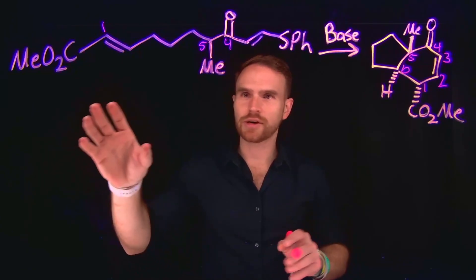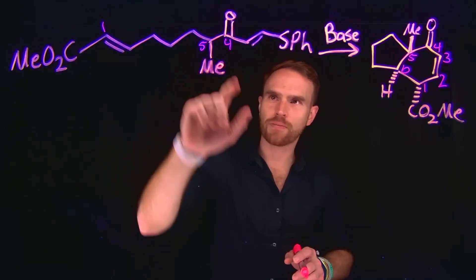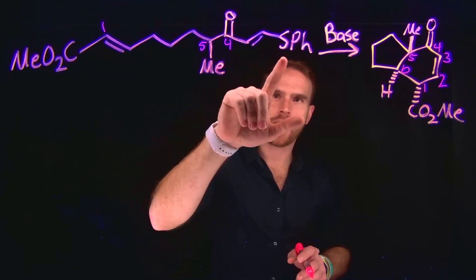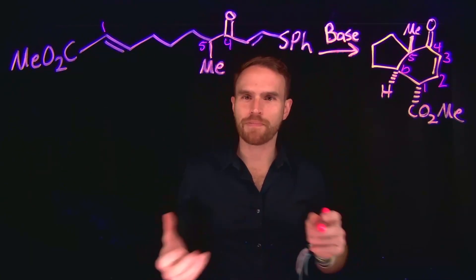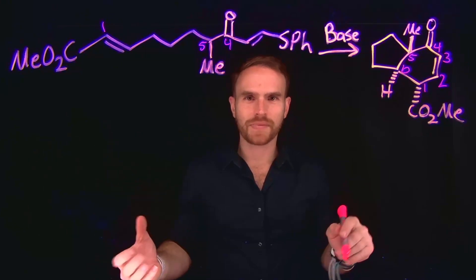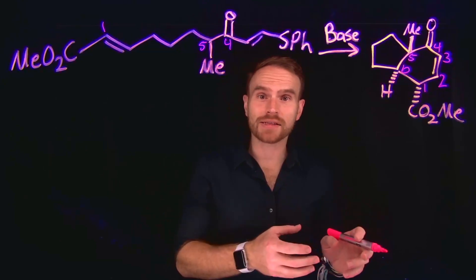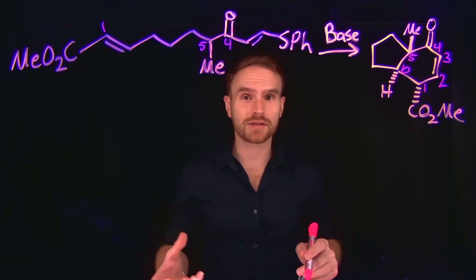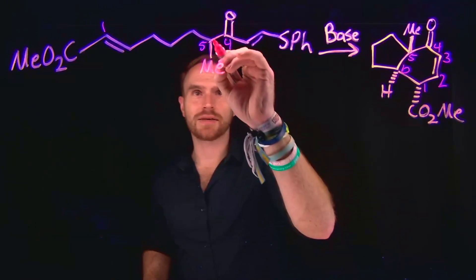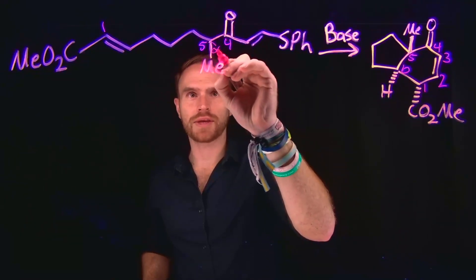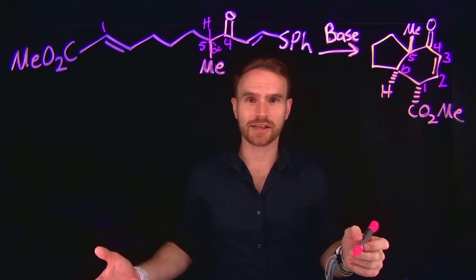The next thing I'm going to do is look at the different functional groups present. I have an ester here, a methyl group, a carbonyl ketone, and also a thioether at this position. The reaction takes place under basic conditions, so a base is added. Importantly, I know that any time I have a carbonyl functional group and a base, I can often form enolates through enolate formation by deprotonation of an alpha carbon hydrogen. Specifically, at this position — which we could call the alpha carbon — there is a hydrogen which could be deprotonated to form an enolate species.